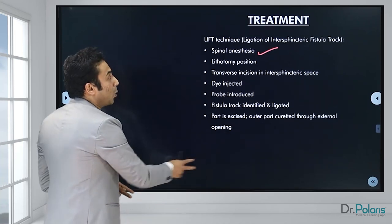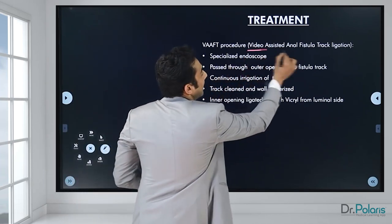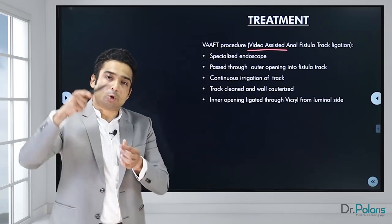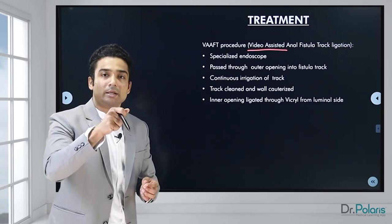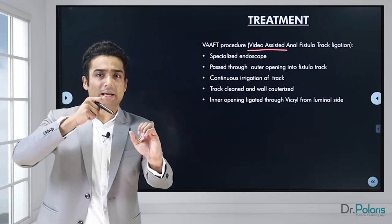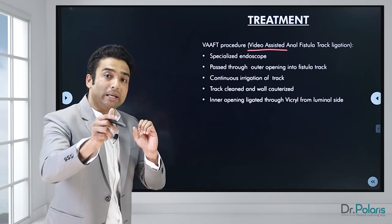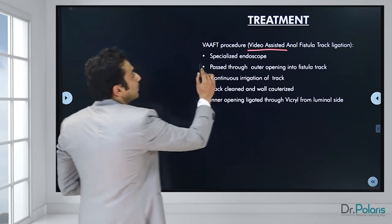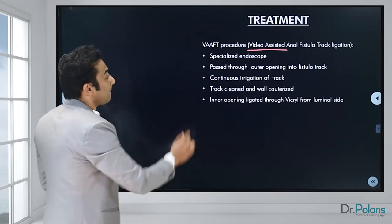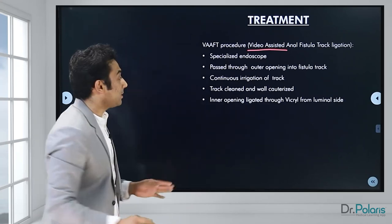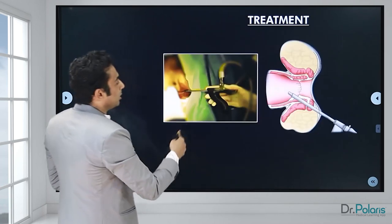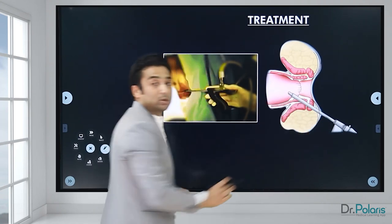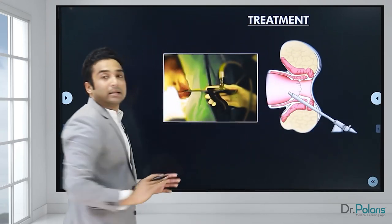There is also a modified version called VAAFT — Video Assisted Anal Fistula Tract ligation. A specialized instrument like a camera probe is passed from the external sphincter into the internal sphincter, visualizing the tract under vision from the external opening to the internal opening. The tract is continuously irrigated and cauterized so the entire tract is cauterized and heals. The inner opening is ligated through vicryl from the luminal side. You can see the device going from the external opening up to the internal opening, the walls are cauterized, and the fistula tract heals.